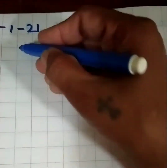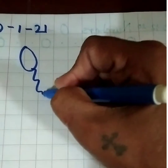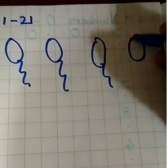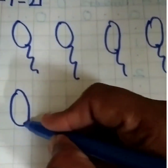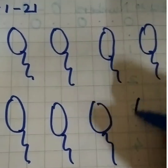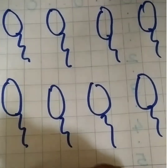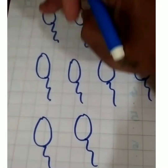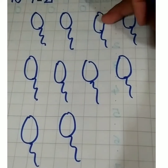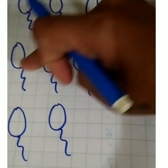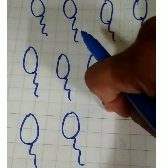Then you will draw 10 balloons. So here we go: 1, 2, 3, 4, 5, 6, 7, 8, 9, 10. How many balloons have we drawn? Let's count them: 1, 2, 3, 4, 5, 6, 7, 8, 9, and 10 — 10 balloons!